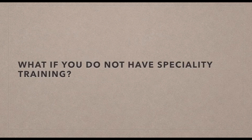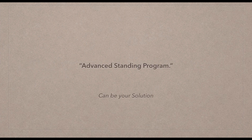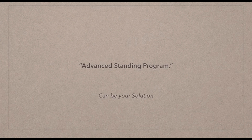What if you do not have specialty training? What if you just want to be a general dentist and do general dentistry? The solution is the advanced standing programs — the AIPD programs for international dentists — where you are placed in the second or third year of your DMD or DDS. You complete your pre-clinicals in about six months, then enter the third year of dental school, study alongside regular students for two years, and after passing your exams, you can appear for clinical exams like NERB or WREB.